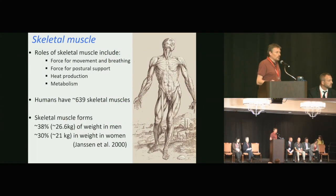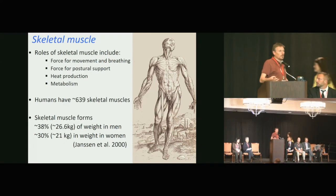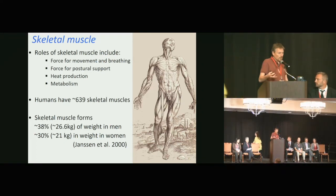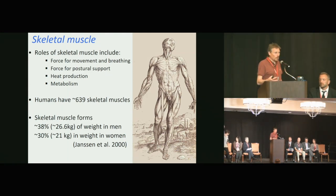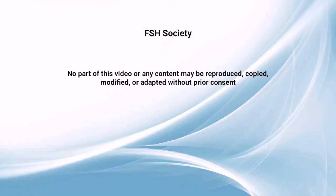There's lots of muscle throughout your body. The average man has about 38% of body weight as muscle, with 639 muscles spread throughout the body. So it's a lot — it's a big tissue, and obviously it's important for movement.